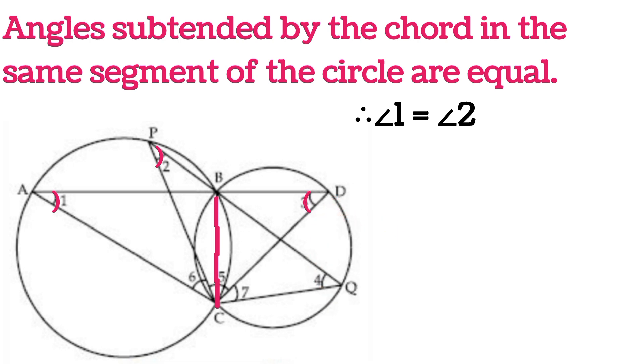Similarly, angle D and angle Q will be equal to each other. So angle 3 is equal to angle 4.